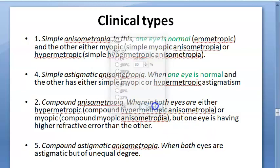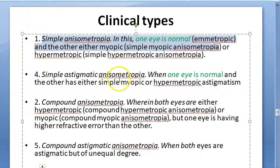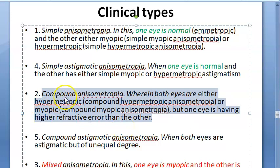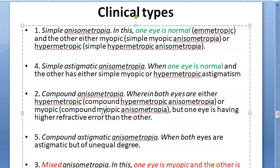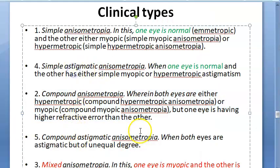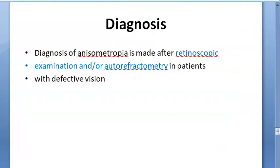Clinical types: Simple anisometropia means one eye is normal. In simple astigmatic anisometropia, one eye is normal and the other is myopic, hypermetropic, or astigmatic. Compound anisometropia means both eyes are hypermetropic, or both are myopic, or both are astigmatic — but there is a significant difference in power between them. Up to 2.5 diopters is fine, but beyond that the person will not tolerate it. In compound anisometropia, both eyes have the same condition but at different levels.